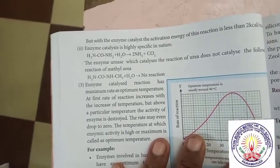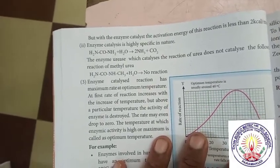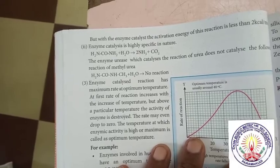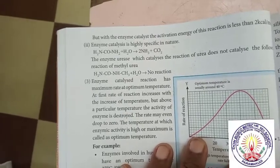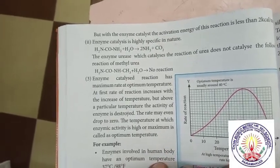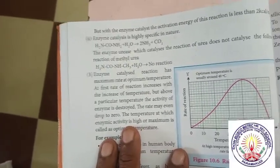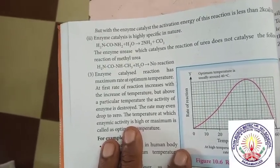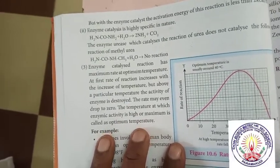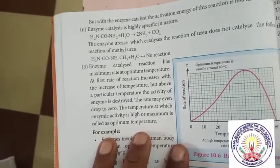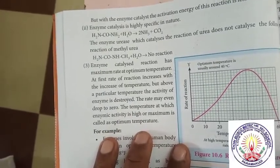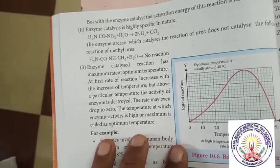Enzyme catalyzed reaction has a maximum rate at an optimum temperature. At first, the rate of the reaction increases with the increase in temperature. But above a particular temperature, the activity of the enzyme is destroyed and the rate may drop to zero. The temperature at which enzyme activity is maximum is called the optimum temperature.